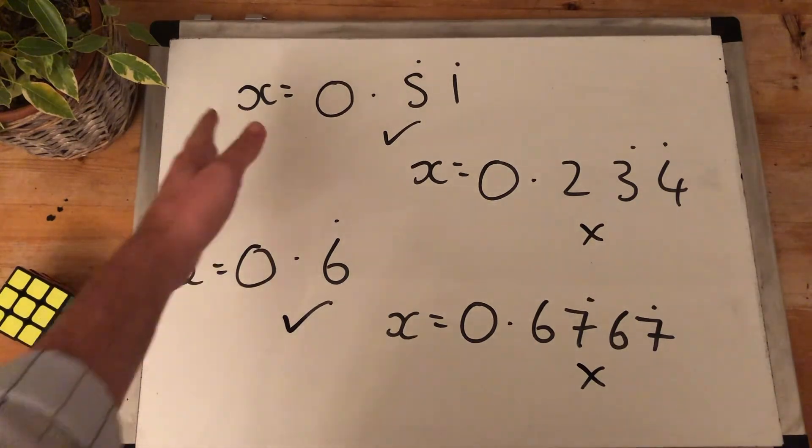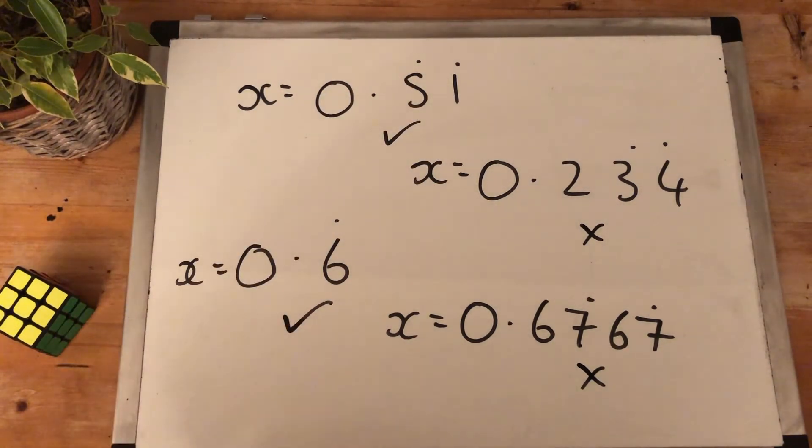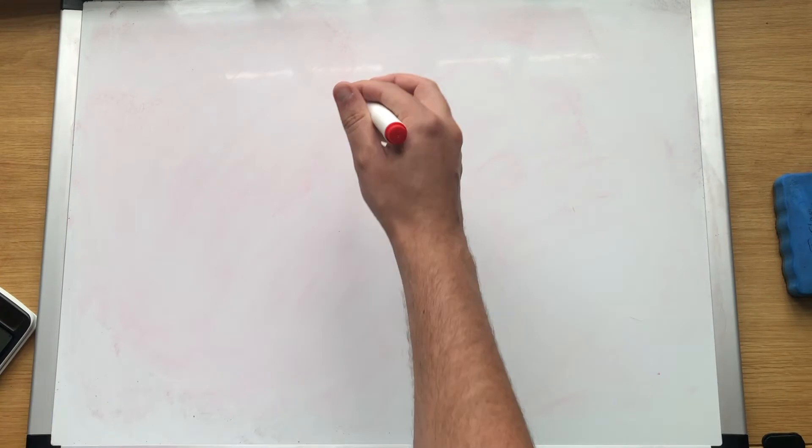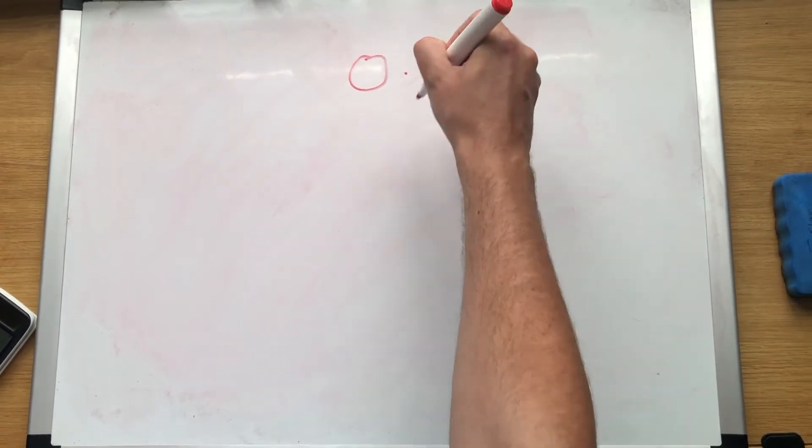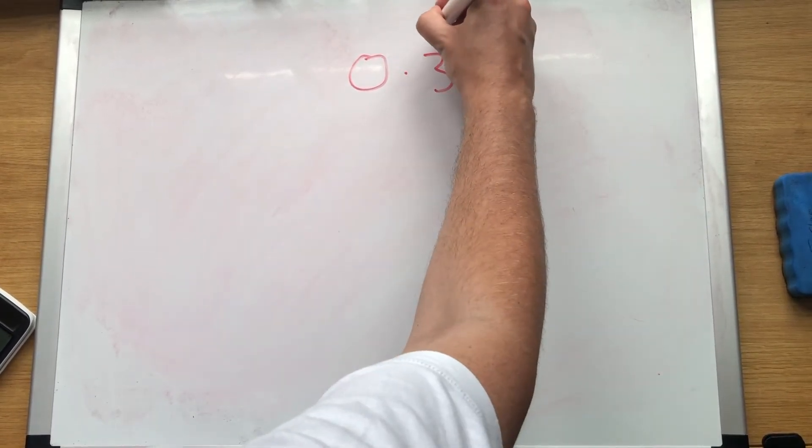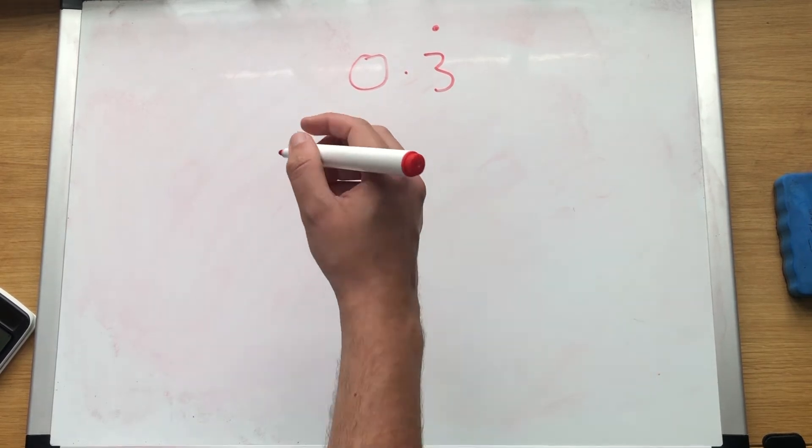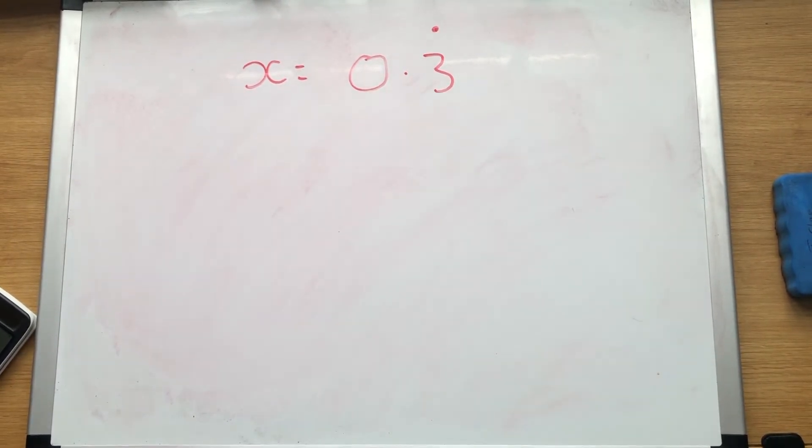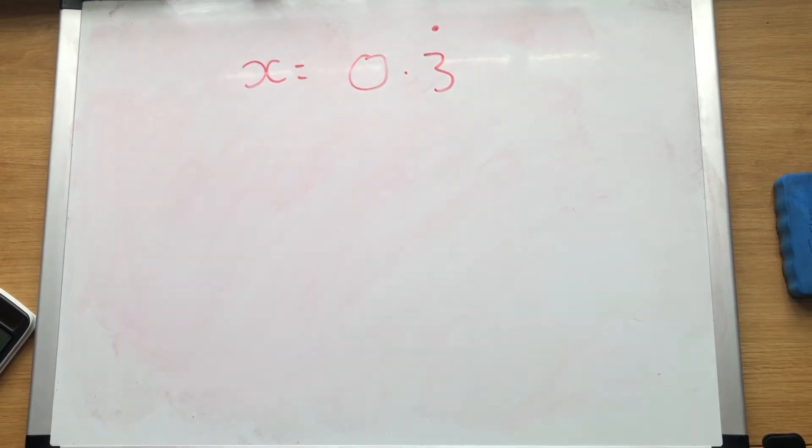So that's step one: X equals. Step two: Does everything after the decimal point recur? I'm now going to show you step three. Let's start with 0.3 recurring. So we've got step one, we've got step two. 0.3 recurring. What's our first step? X equals. Our next step: Does everything after the decimal place recur? Yes. So we're able to solve this one.